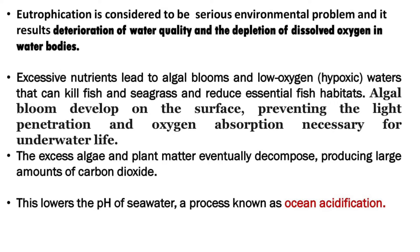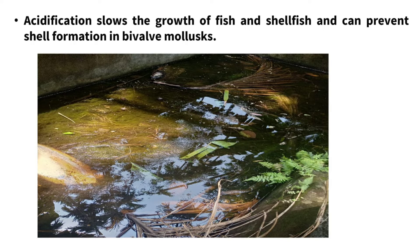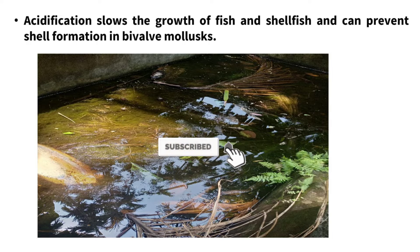Excess algae and plant matter eventually decompose and produce large amounts of carbon dioxide. This lowers the pH of seawater and it is known as ocean acidification. Acidification slows the growth of fish and shellfish and can prevent shell formation in bivalve mollusks.